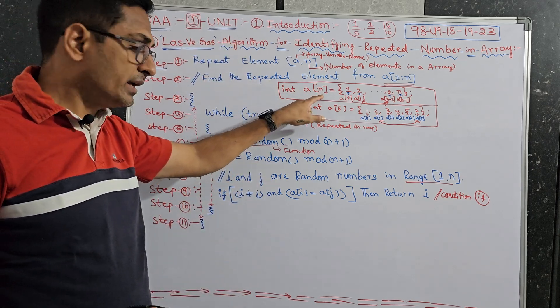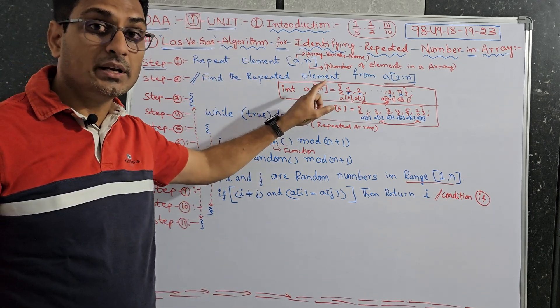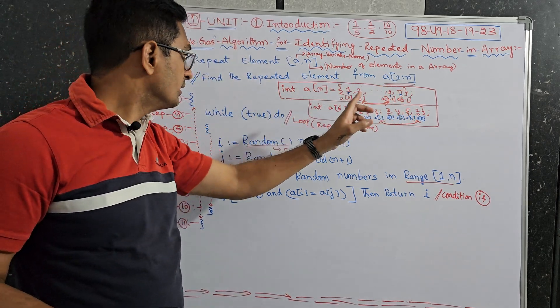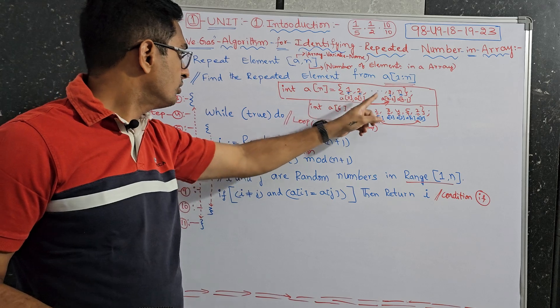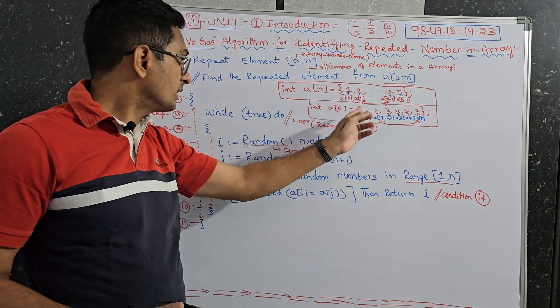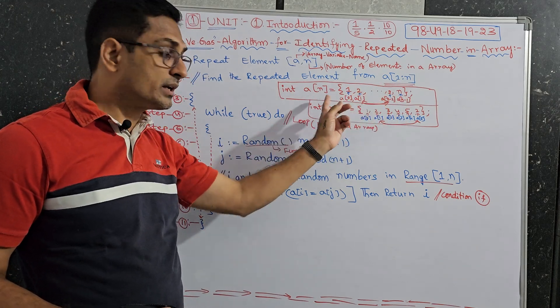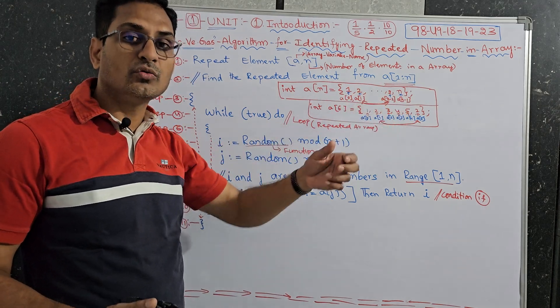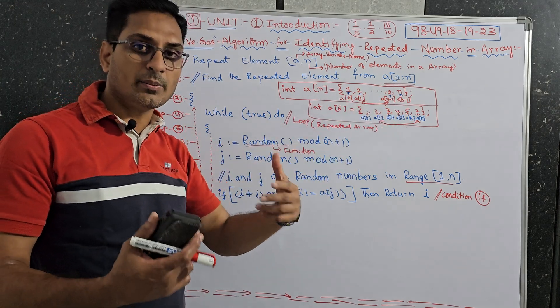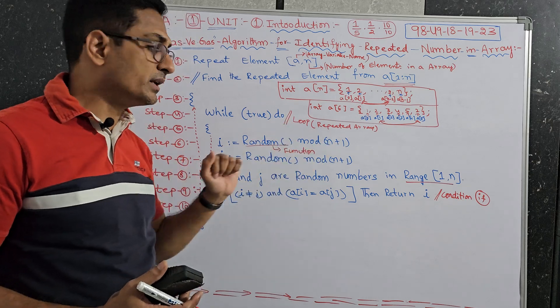Int a of n means n numbers are there: 1, 2, up to n. After that, some numbers are repeated and we need to find out those repeated numbers randomly.